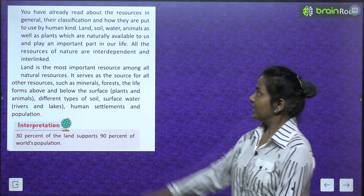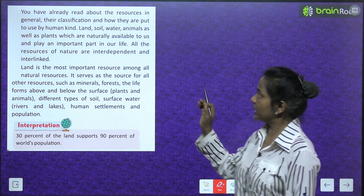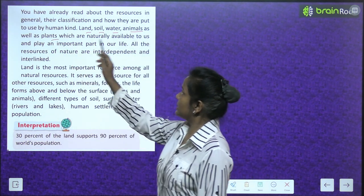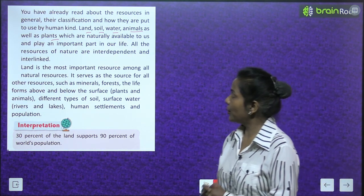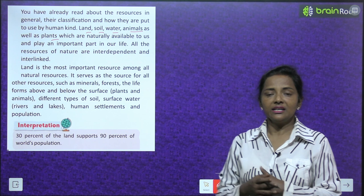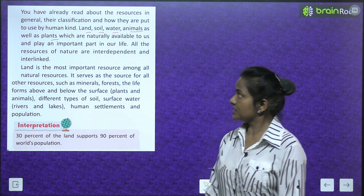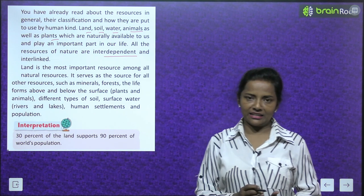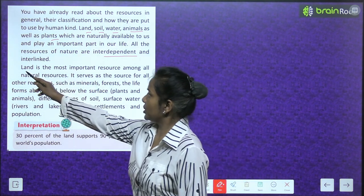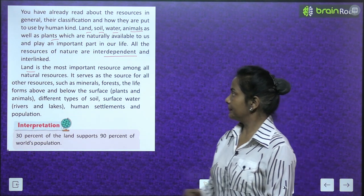We have already read about resources in general in the previous chapter — their classification and how they are put to use by humankind. Land, soil, water, animals, as well as plants which are naturally available to us play an important part in our life. All the resources of nature are interdependent and interlinked. Land is the most important resource among all natural resources.